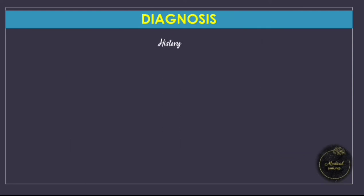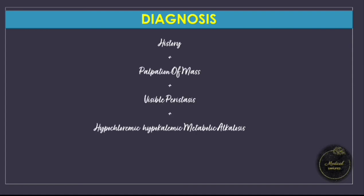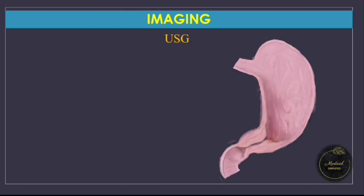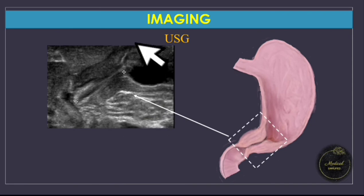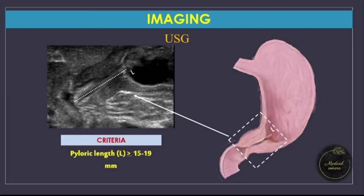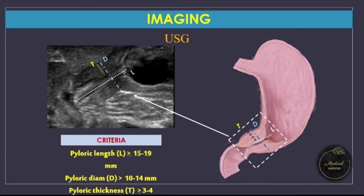Diagnosis can easily be made clinically with typical history, palpation of an olive-shaped mass, visible peristalsis, and blood gas abnormality, and confirmed with imaging. On ultrasound, a thickened and elongated pylorus is visualized. There are three criteria for diagnosis: pyloric length greater than 15–19 millimeters, pyloric diameter greater than 10–14 millimeters, and pyloric muscle thickness greater than 3–4 millimeters.